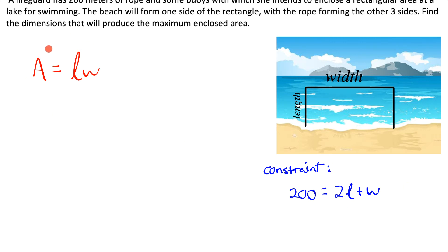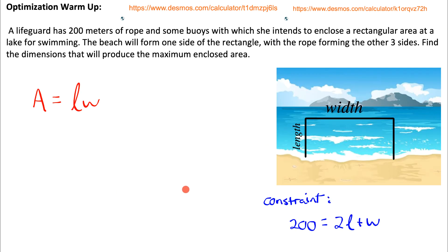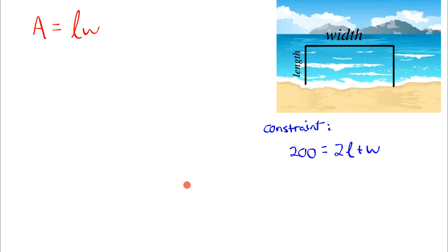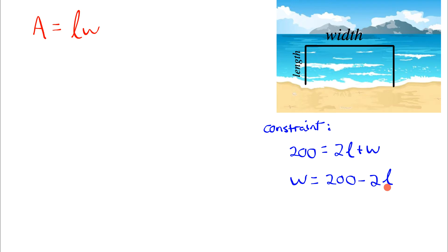What we're going to do with this information is adapt our area function so that it's a function of only one variable that gives the area for the rectangle with a perimeter of 200 meters. I'll rearrange the constraint formula to isolate w, giving: w equals 200 minus 2l. This rearranged version tells us what the width would be based on whatever length we choose, in order to keep the perimeter at 200.